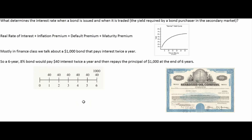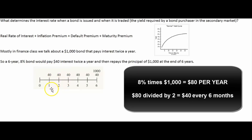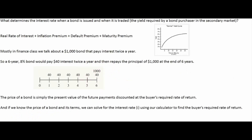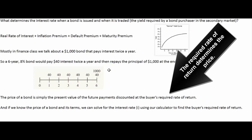In a finance class we typically talk about a bond that pays interest twice a year with a face amount of one thousand dollars. For example, an eight percent bond outstanding for six years would pay forty dollars twice a year — eight percent times a thousand is eighty, and since bonds pay interest semiannually, half of that is paid every six months. So you'd receive forty, forty, forty, and so on until the principal is repaid at the end of six years.